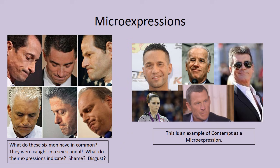Here are some examples of micro-expressions. On the left, six men who were all caught in a sex scandal — what do their expressions indicate? Shame, disgust with themselves. They're pulling their lips in, literally sucking them in, their face turned down, eyes downcast, not making eye contact. It is almost absurd how similar they all look. And on the right, we have the expression of contempt — Lance Armstrong, the guy from Jersey Shore, Simon Cowell, the silver medalist at the Olympics, and Joe Biden, all displaying that classic contemptuous expression.